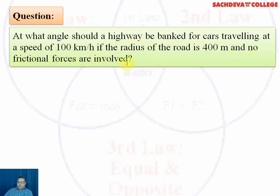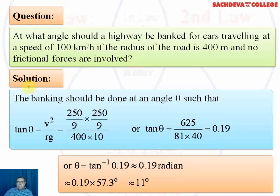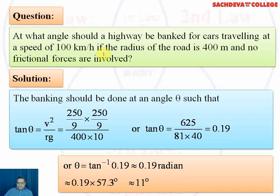In this question, the given parameters are: radius of the road is 400 meters, and the speed is 100 kilometers per hour. This 100 kilometers per hour is multiplied by 5 over 18 to be converted into meters per second. Frictional force is neglected.